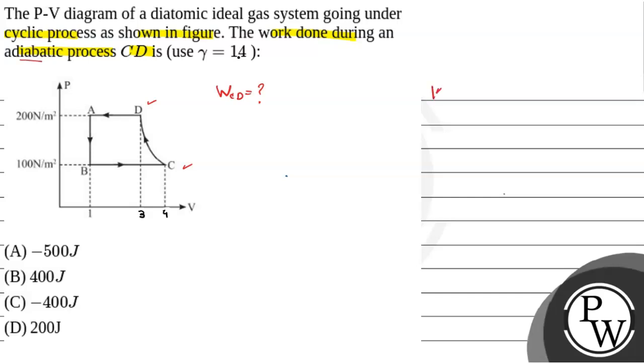So this question is a key concept. That is work done. Work done in adiabatic process. Adiabatic process. Now, work done along path in adiabatic process, let's care about that.